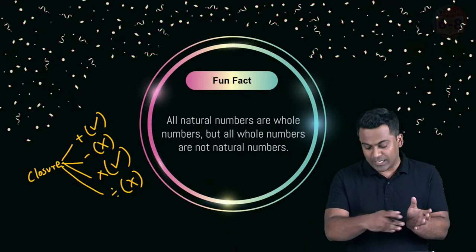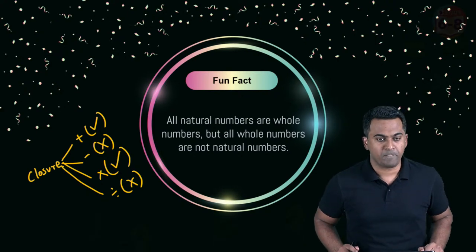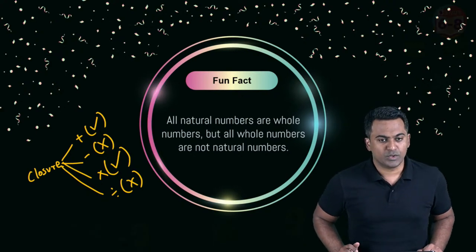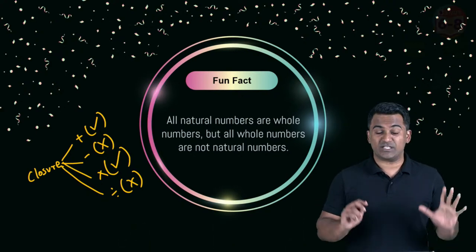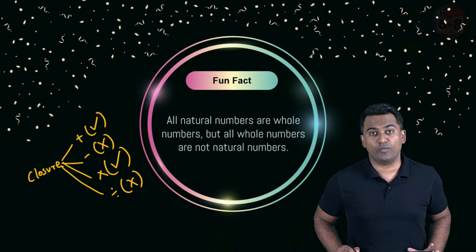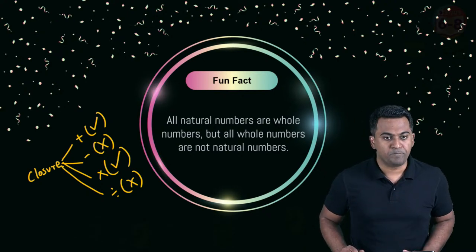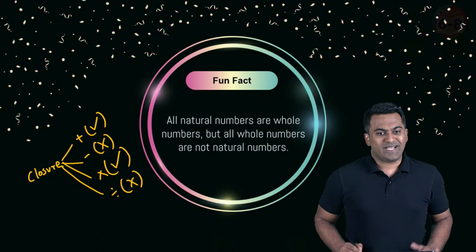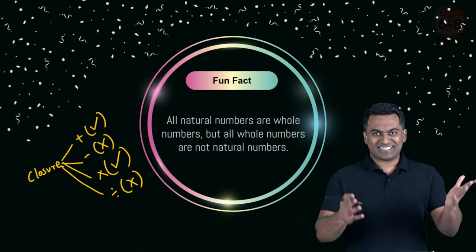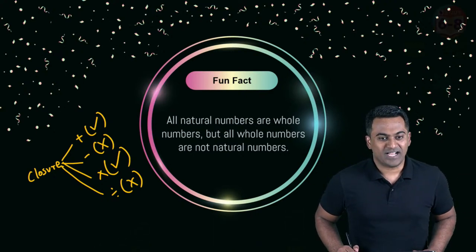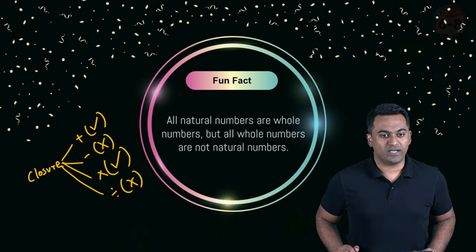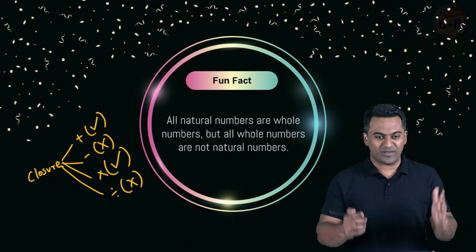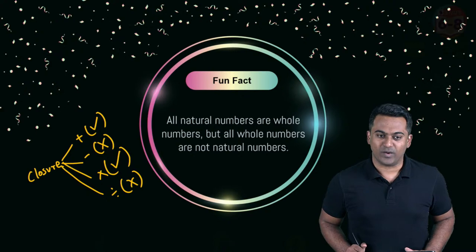So the closure property summary: addition follows it, subtraction does not, multiplication follows it, and division does not. If there are any doubts, let me know and we'll clarify before moving on to the next property.